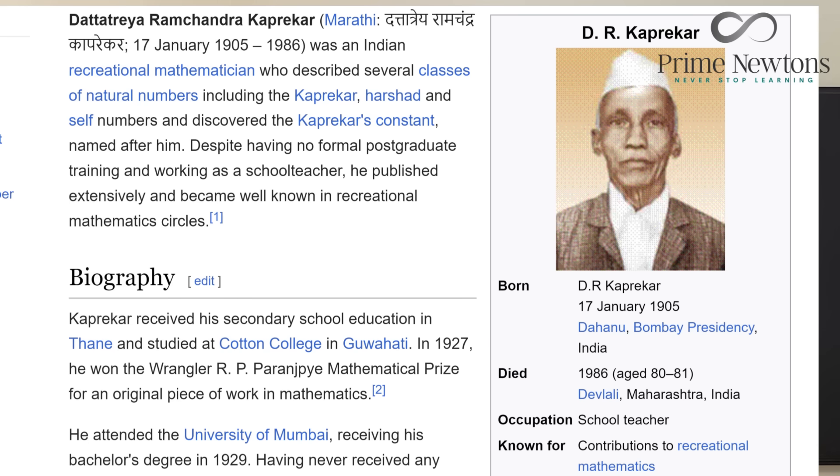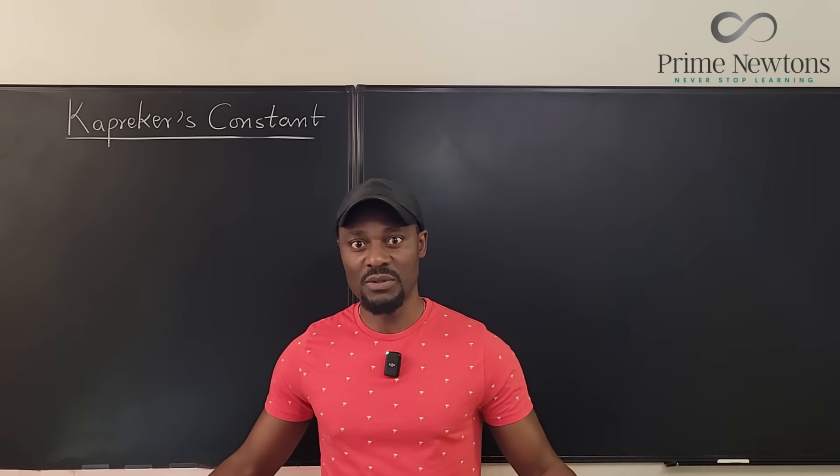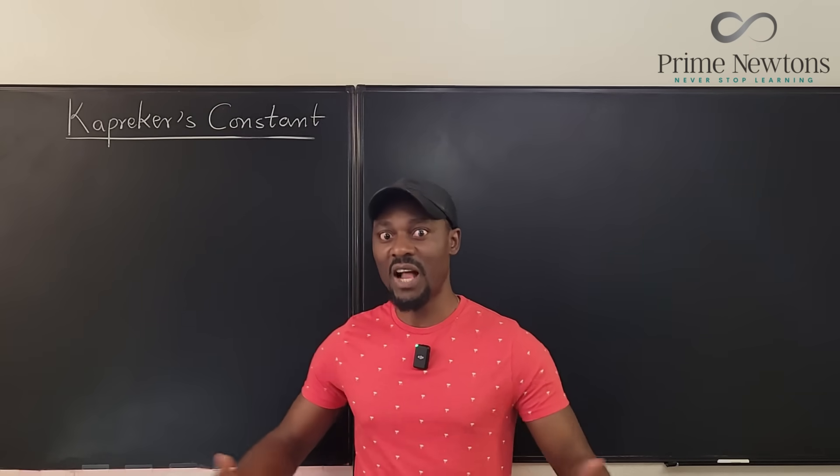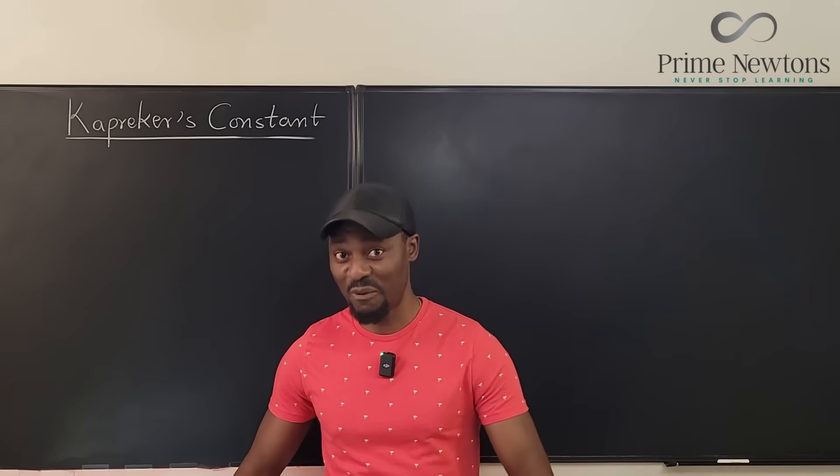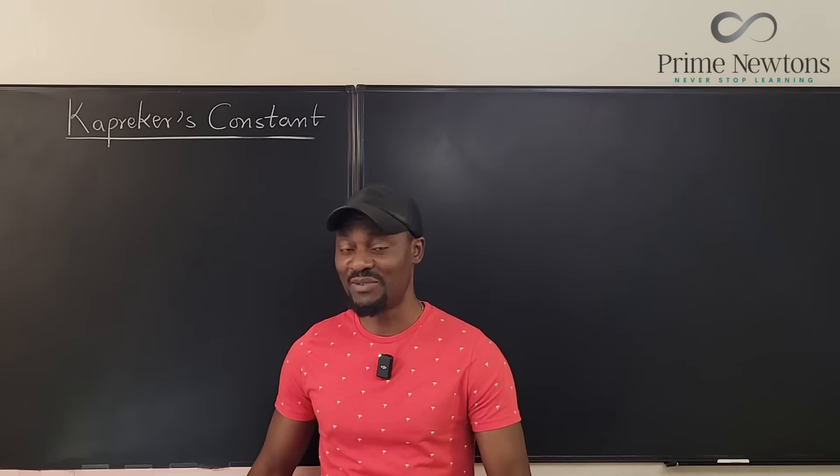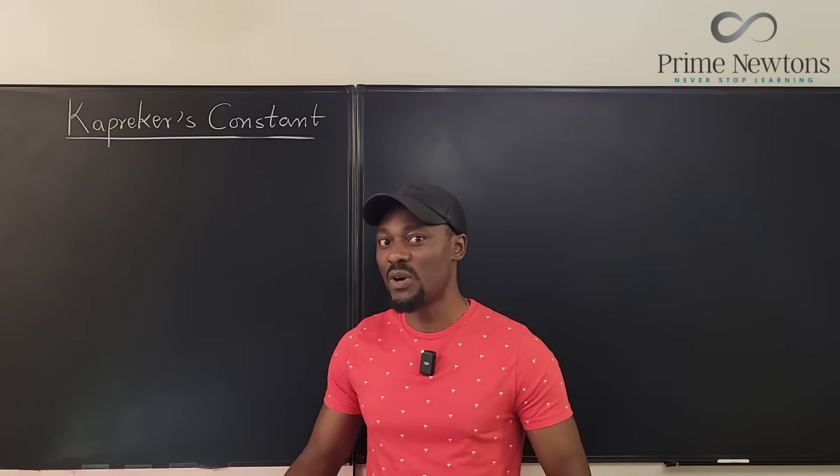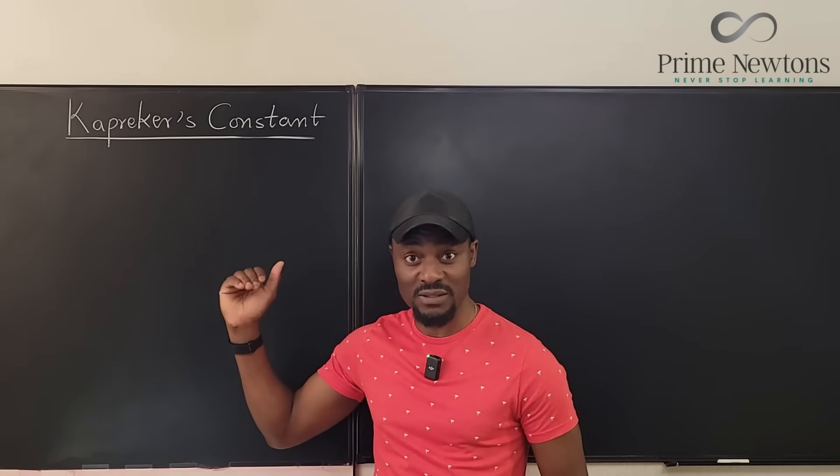He actually found so many things and defined so many types of numbers. Things like Kaprekar's numbers and self-numbers. These are numbers you haven't heard about, I believe, but these are the things that he worked on. But the most amazing of them is Kaprekar's Constant.